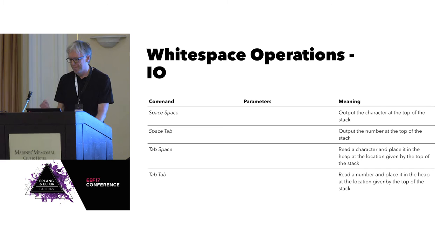Flow control: you can mark locations in the program and do a subroutine jump or an unconditional jump as dictated by these labels. IO: output the top of the stack as either a number or a character, and conversely, read a character or a number.